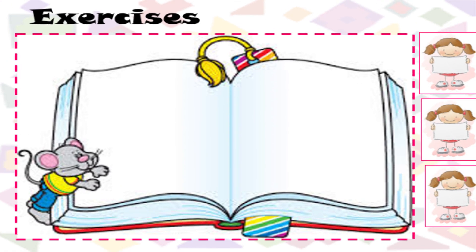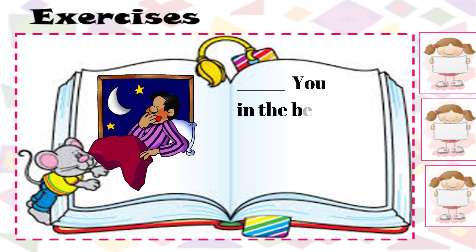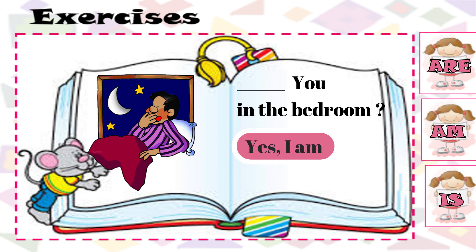Exercise: are you in the bedroom? Is it are, am, or is? Look at the picture and answer. The answer can be: yes, I am — or no, I am not. This is the short answer form.